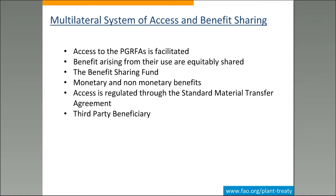The treaty is implemented through the multilateral system of access and benefit sharing. This is a system through which access to plant genetic resources material is facilitated. The benefits arising from the use of this material are equitably shared through the benefit sharing fund. There are monetary and non-monetary benefits. In some cases, donors or parties that acquire material through the treaty and make commercial exploitation contribute part of their income to the benefit sharing fund. Non-monetary benefits deal with capacity building, access to technology, and access to information.